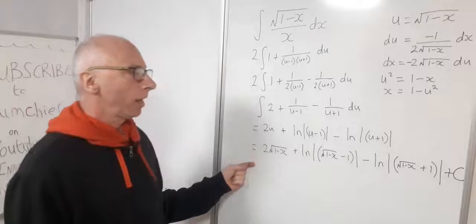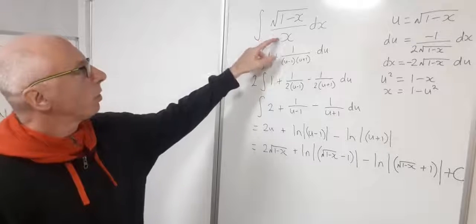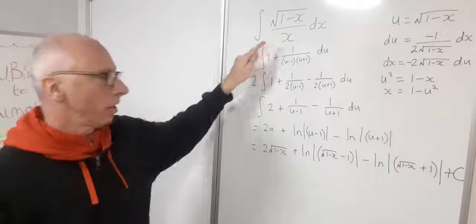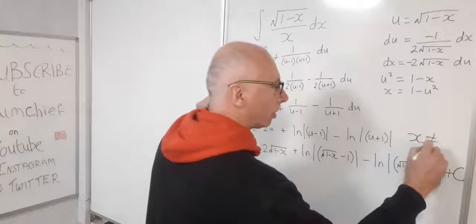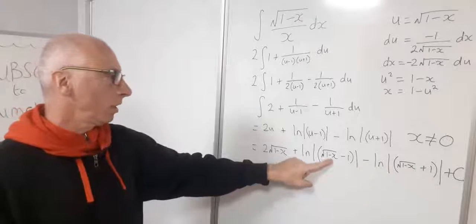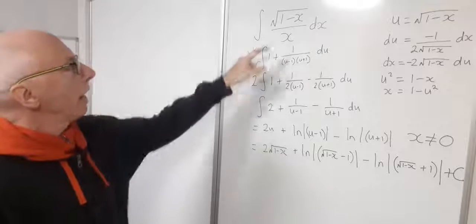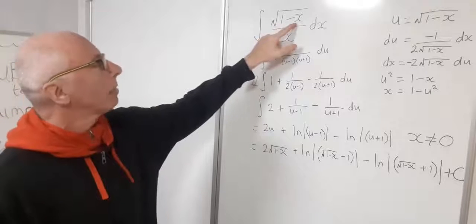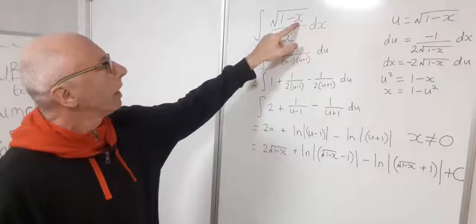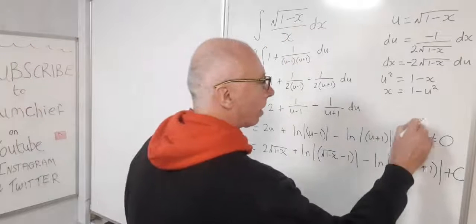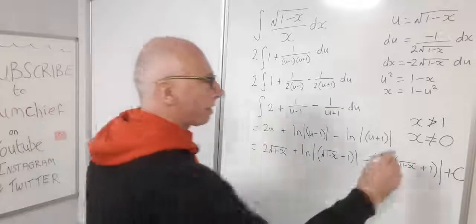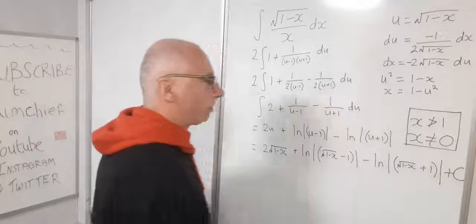A couple of domain conditions need to be made clear. First, x cannot equal zero — plugging in zero would give log of negative one, moving into complex numbers. Second, since we have a square root of 1 minus x, we don't want a negative under the square root, so x cannot be larger than one. These are the conditions for the validity of our result.